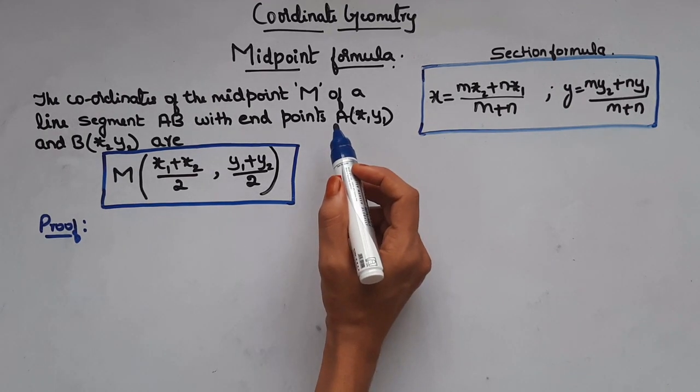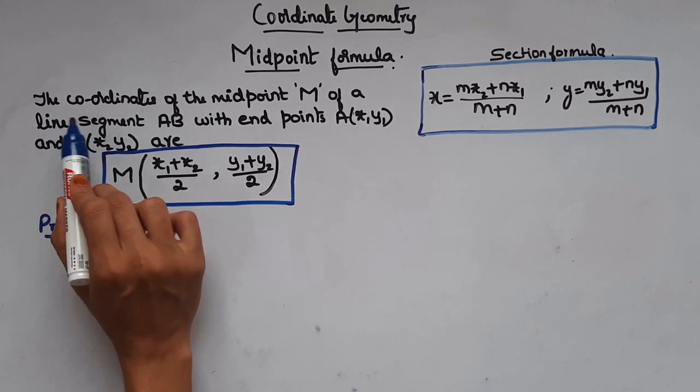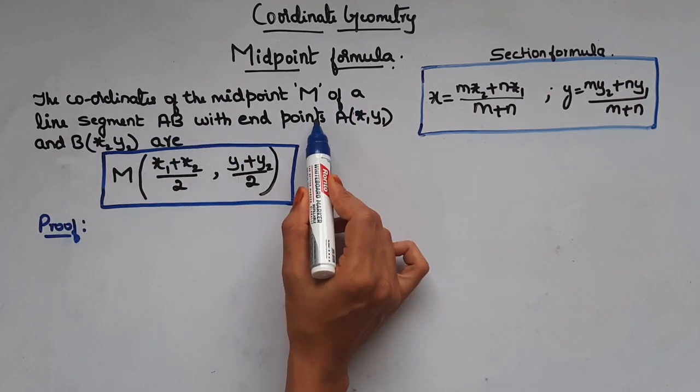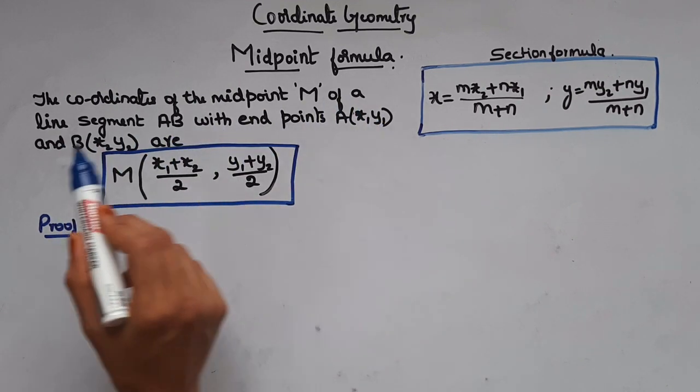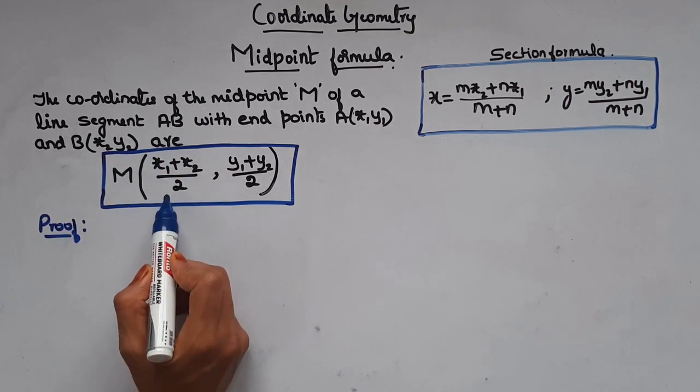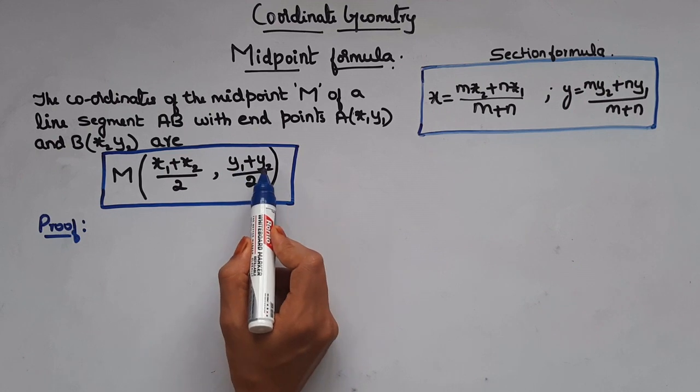Now let's move on to midpoint formula. Here it states the coordinates of the midpoint M of a line segment AB with endpoints A(x₁, y₁) and B(x₂, y₂) are M((x₁+x₂)/2, (y₁+y₂)/2).